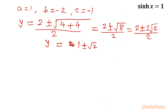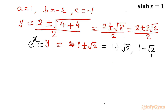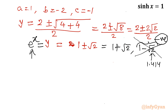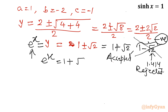Our substitution was y = e^x. So the two values are 1 + √2 and 1 - √2. The value of √2 is approximately 1.414, so 1 - √2 is negative. Since an exponential function cannot be negative, we reject that value. The accepted value is e^x = 1 + √2. Taking ln of both sides: x = ln(1 + √2).